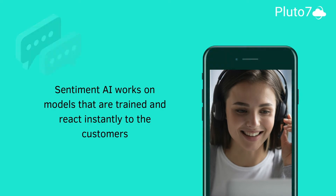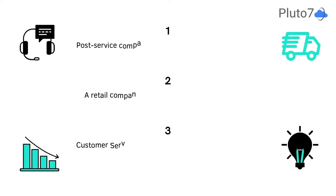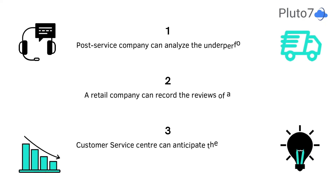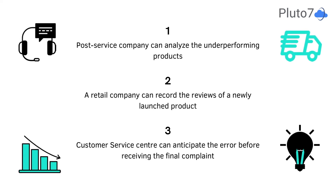A pro-service company can identify a service in which they are underperforming based on third-party reviews. A retail company can measure the reaction of a new product launch across different market segments. Finally, a customer service center can anticipate an error before receiving a direct complaint.